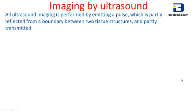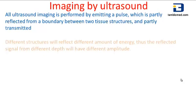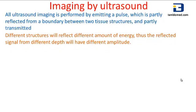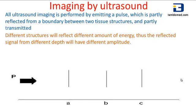Ultrasound imaging is performed by emitting a pulse which is partly reflected from a boundary between two tissues and partly transmitted. Different structures will reflect different amounts of energy, so the reflected signals from different depths will have different amplitudes. Let P be the ultrasonic probe, and A, B, and C be the reflecting structures. These structures do not reflect the ultrasonic pulse directly back to the transmitter — they scatter it, and hence they are called scatterers.